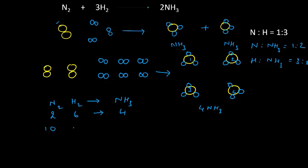Suppose if we take ten nitrogen molecules, how many hydrogen molecules are required? Thirty. And if we take P number of nitrogen molecules, then three P hydrogen molecules are required and we get two P ammonia molecules.